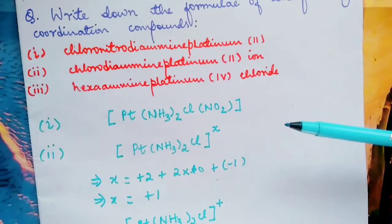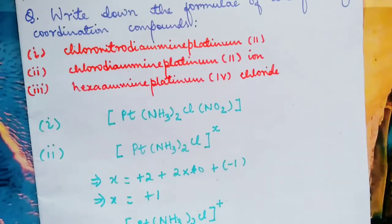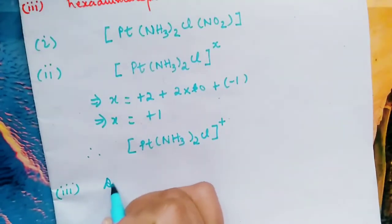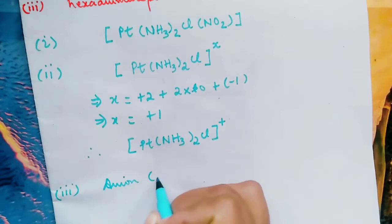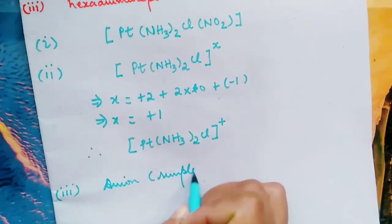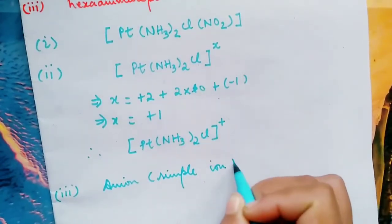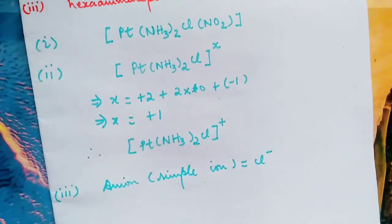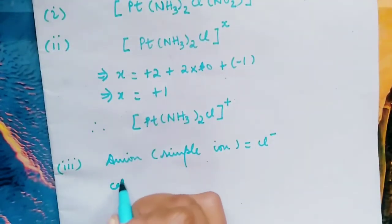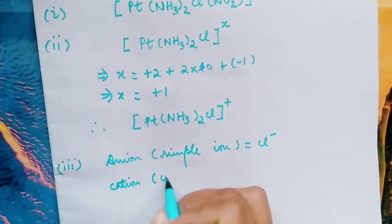...whether the counter ion is an anion or a cation. Obviously it is an anion. Anion or simple ion, what is that? It is chloride, Cl-. And your cation, which is your coordination entity.